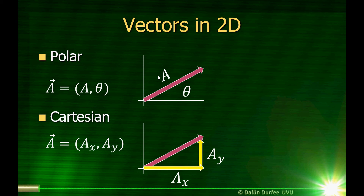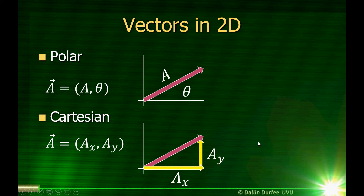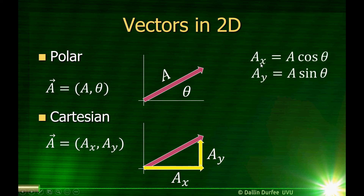In two dimensions, I can write my vectors down mathematically in various different coordinate systems. In a polar coordinate system, we give two parameters: one is the length of the vector, and the other is the angle that vector makes with respect to the x-axis. In Cartesian coordinates, we signify our vector by giving its x and y components. If I know the vector in polar representation, I can convert that into Cartesian coordinates. The x and y components are simply the length of the vector times cosine of theta and the length of the vector times sine of theta.